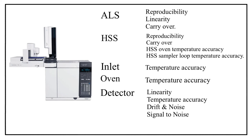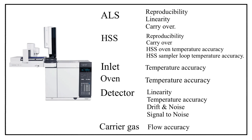Now comes the last calibration parameter, which is related to carrier gases. All the carrier gases are checked using a flow accuracy test parameter, and generally a digital flow meter is used to carry out this test.